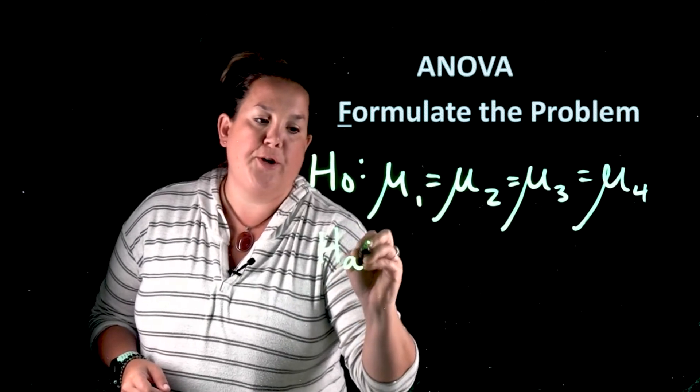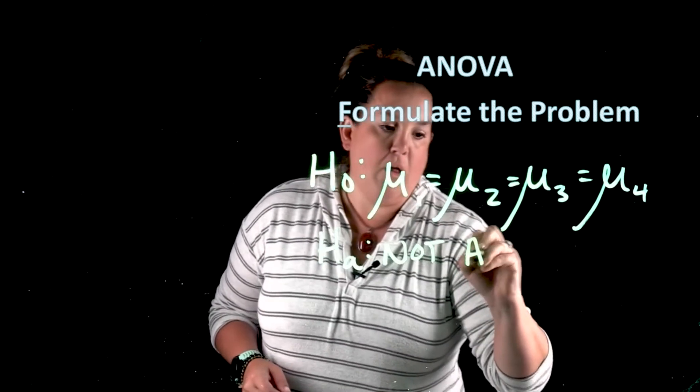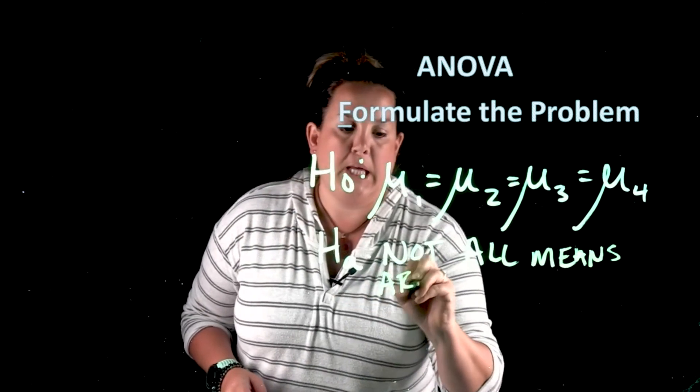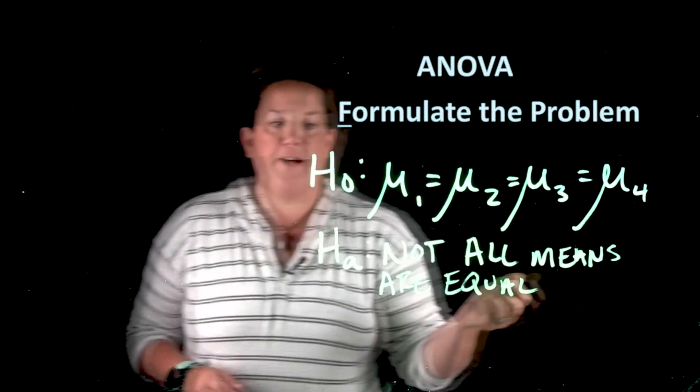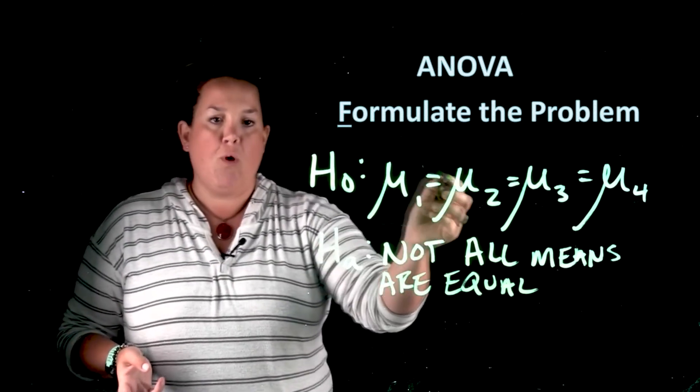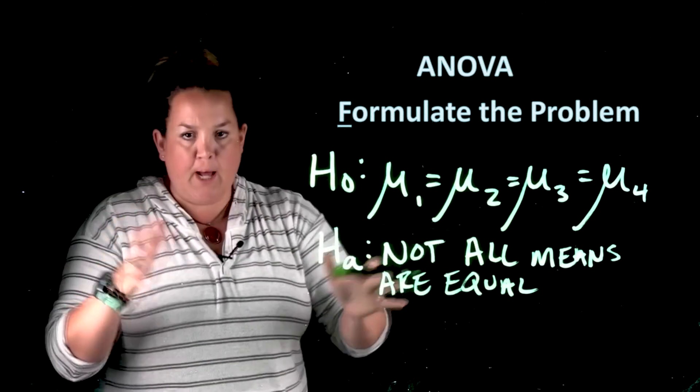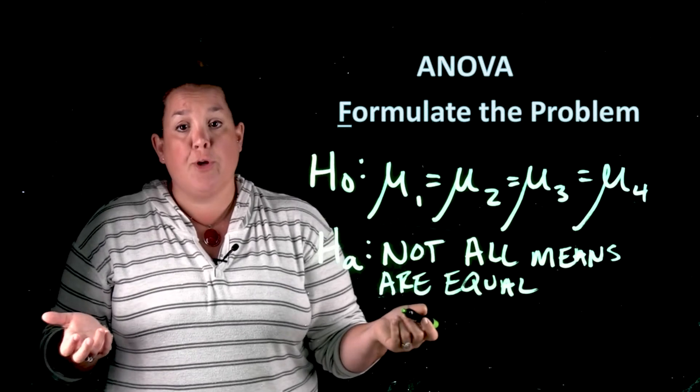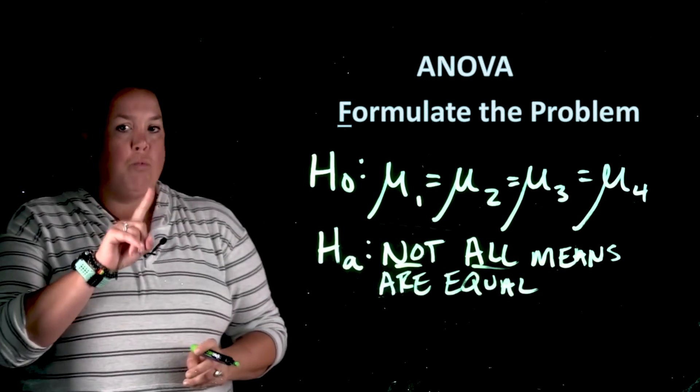However, your alternative is going to be not all means are equal. And the reason that we say this is because you only need one mean to not be the same. If we wrote out μ₁ doesn't equal μ₂ doesn't equal μ₃ doesn't equal μ₄, that means that all of them cannot be equal to each other. Whereas when you write it this way, which is actually what the ANOVA is testing for, is that not all means are equal. So you only need one that's different.